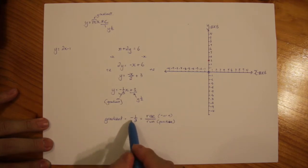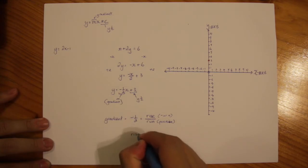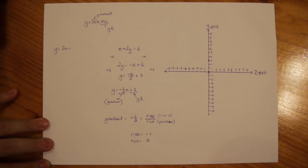So if you get confused of where to apply this negative symbol, just throw it onto the top. So we have our rise is equal to minus 1 and our run is equal to 2.